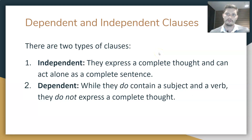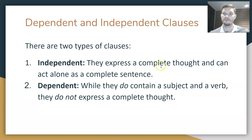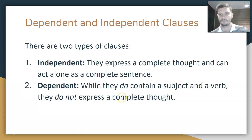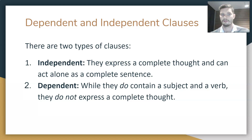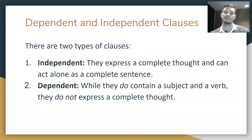Now, there are two types of clauses and you have to be able to distinguish between the two. First, we have independent clauses — they express a complete thought and they can act alone as a complete sentence. Then there are dependent clauses. While they do contain both a subject and a verb, they do not express a complete thought. So both dependent and independent clauses have a verb and a subject, but only independent clauses can act as a complete sentence because only they express a complete thought.